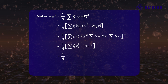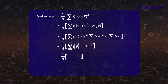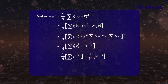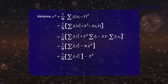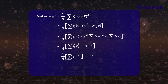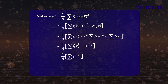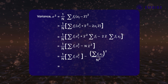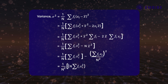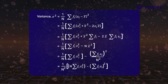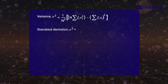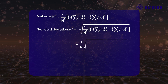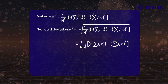Let us distribute 1/N within the brackets. We can rewrite sigma fi as N and sigma fi·xi as N·x̄. This gives us (1/N) times sigma fi·xi² minus x̄². Writing x̄ as (sigma fi·xi)/N and taking 1/N² out, the formula for variance becomes (1/N²) times [N·sigma(fi·xi²) − (sigma fi·xi)²]. The standard deviation is the positive square root: (1/N) times the square root of [N·sigma(fi·xi²) − (sigma fi·xi)²].